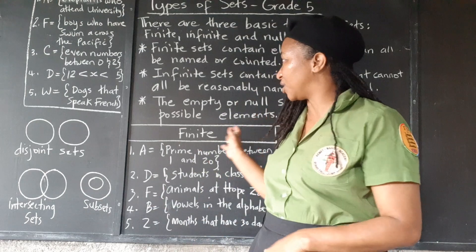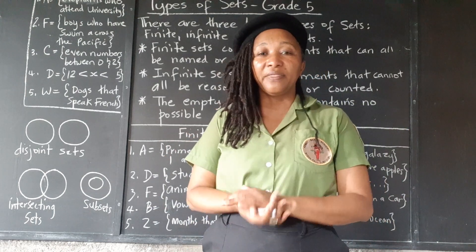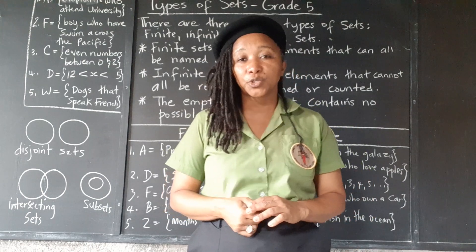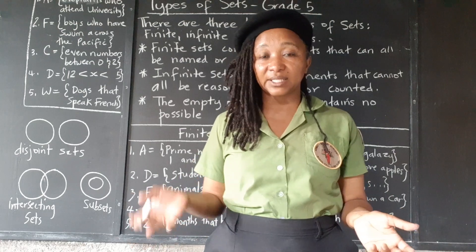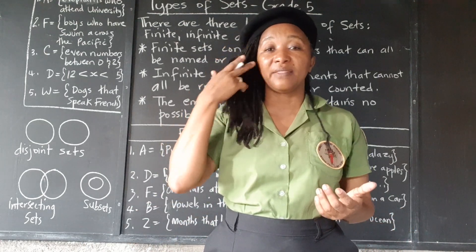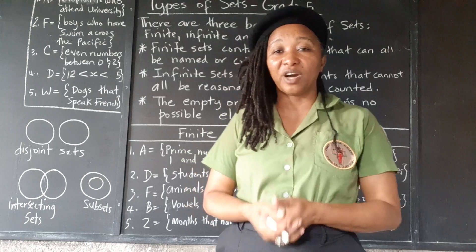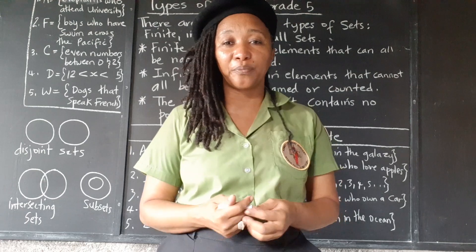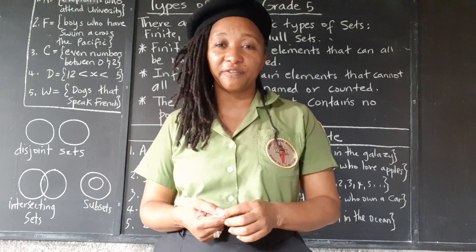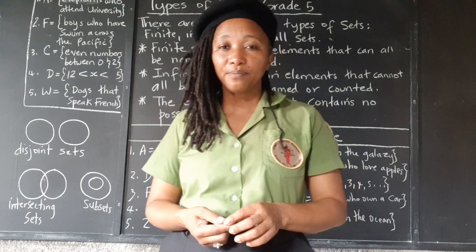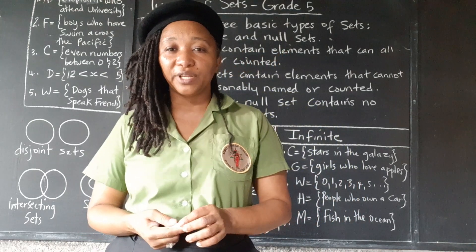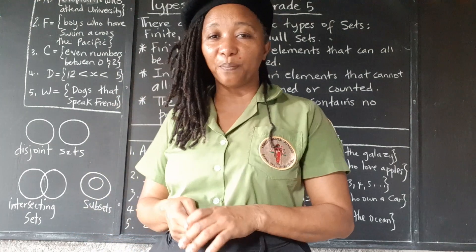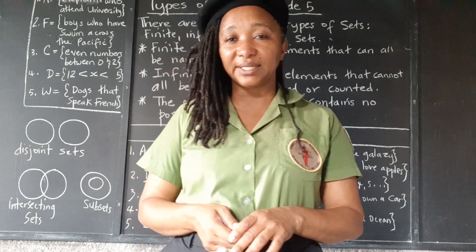So those are your definitions for types of sets. In the next video, we're going to do some work with Venn diagrams to show how sets intersect and how we can list the elements. If you have benefited from this video, drop a word to say thank you and share the video so others may benefit. If you have any topics you want me to do videos on, just let me know. Please subscribe if you haven't done so — thank you and I'll see you in the next video.